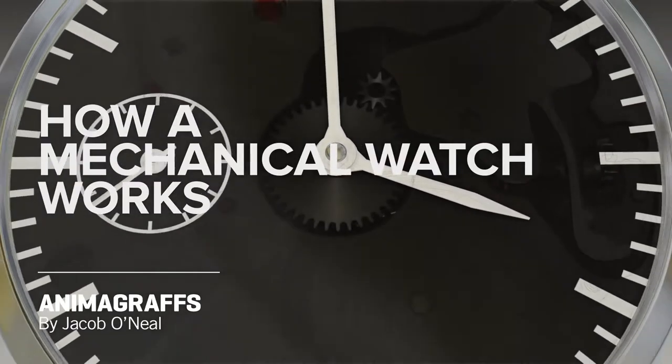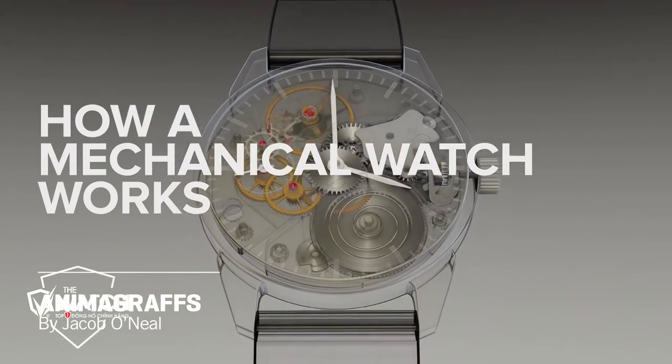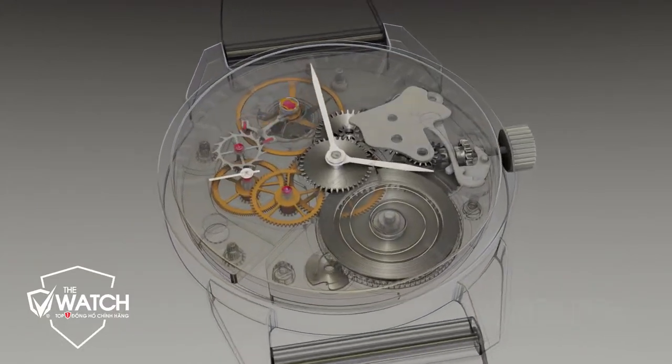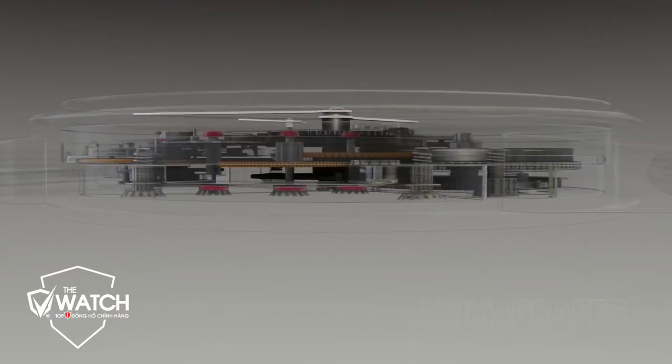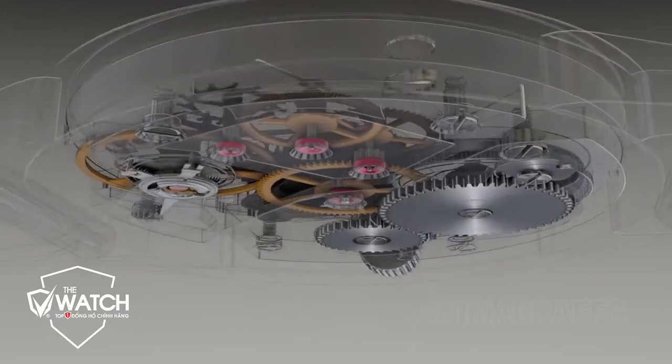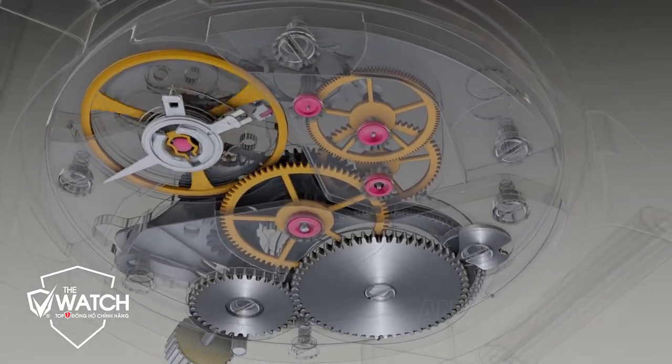I'm Jake O'Neill, creator of Animagraphs, and this is how a mechanical watch works. Watches have no battery, microchip, or circuitry. Watch parts are machined to near perfection at microscopic sizes and tolerances and can produce accuracy within 2 to 3 seconds per day.